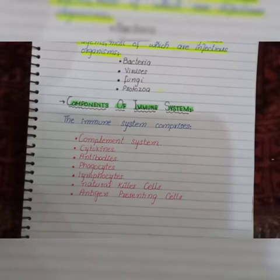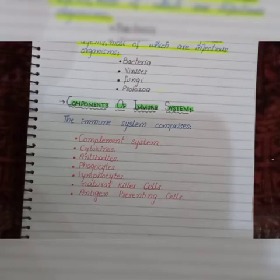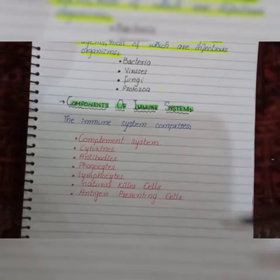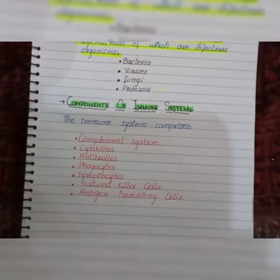Neutrophils and macrophages are also known as phagocytes. They can engulf particles by a process known as phagocytosis. Next we have lymphocytes. They help in the production of antibodies and also in the generation of memory cells.